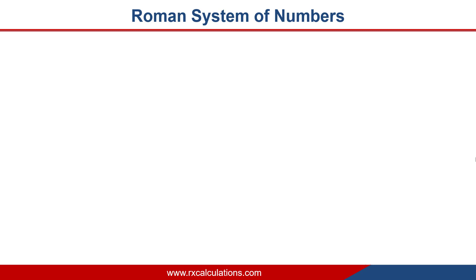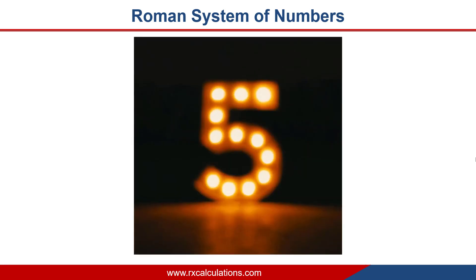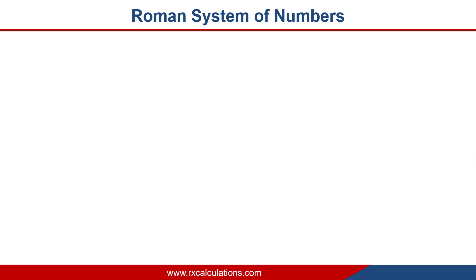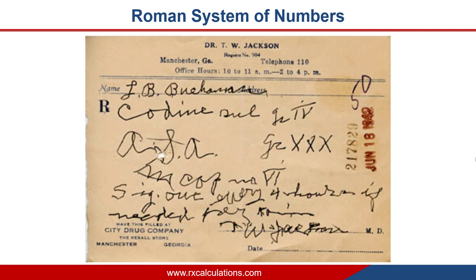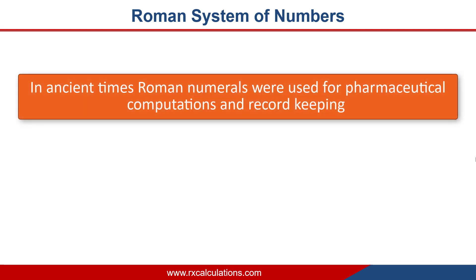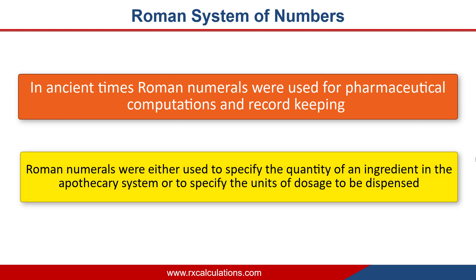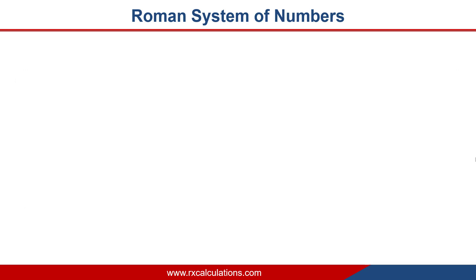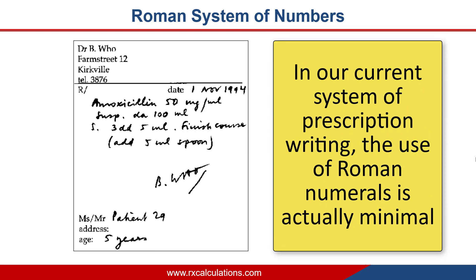Today when we talk about numbers, the most common form is Arabic numerals — that is 1, 2, 3, and so on. However, if you take a look at some older prescriptions, you will not see Arabic numerals but rather Roman numerals. That is because in ancient times Roman numerals were used for pharmaceutical computations and record keeping — either to specify the quantity of an ingredient in the apothecary system or to specify the units of dosage to be dispensed. In our current system of prescription writing, the use of Roman numerals is actually minimal.